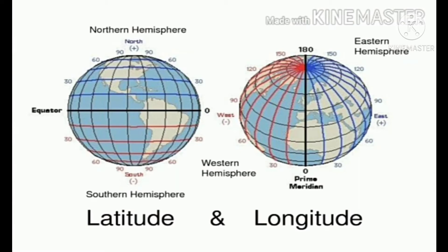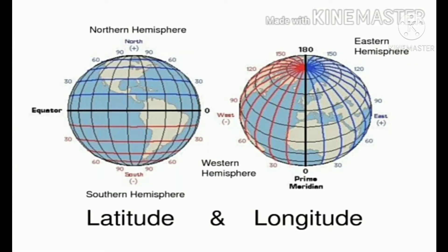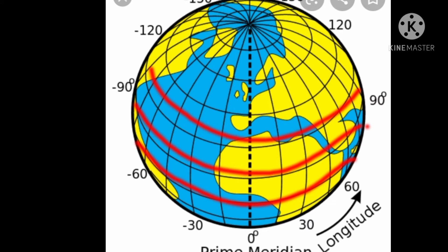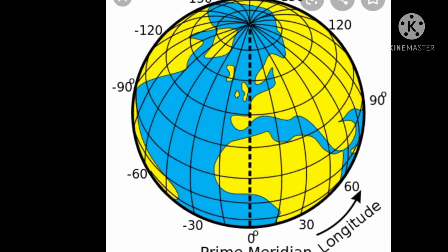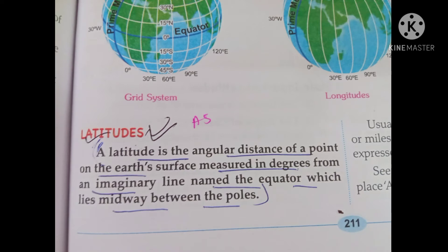If you look at the globe carefully, you will find various horizontal and vertical lines. These vertical lines are called longitudes and these horizontal lines are called latitudes. A latitude is the angular distance of a point on the earth's surface, measured in degrees from an imaginary line named the equator, which lies midway between the poles. So latitudes are imaginary lines.